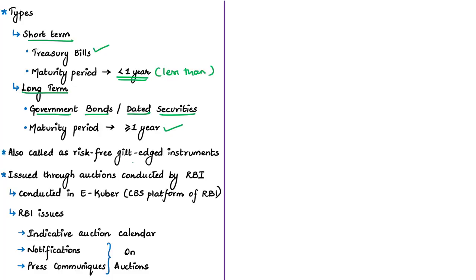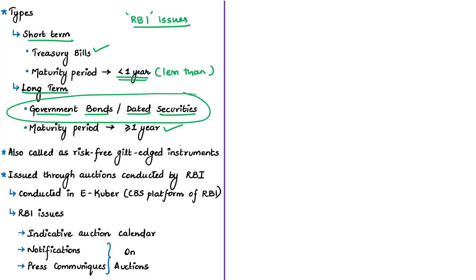These are two types of government securities in India, called government securities because they are issued either by the central government or state governments through the Reserve Bank of India. The central government issues both treasury bills and bonds or dated securities. State governments issue only bonds or dated securities, and those issued by state governments through RBI are called state development loans. Since government will never default on these loans, government securities are called risk-free gilt-edged instruments.